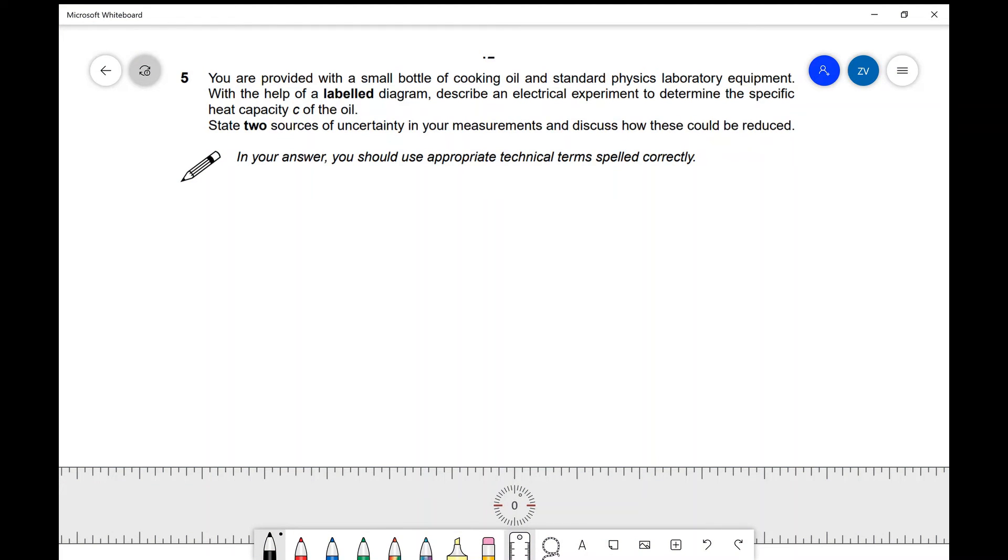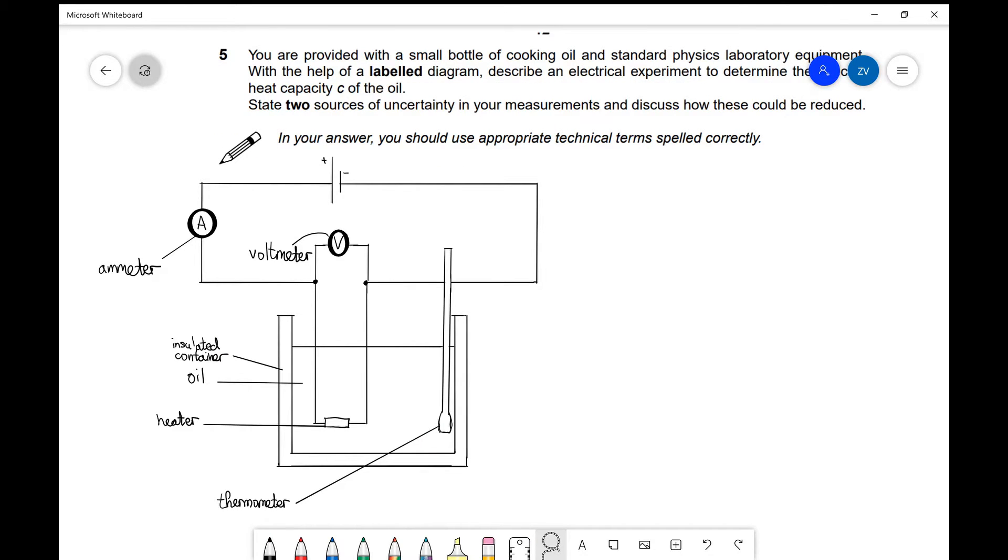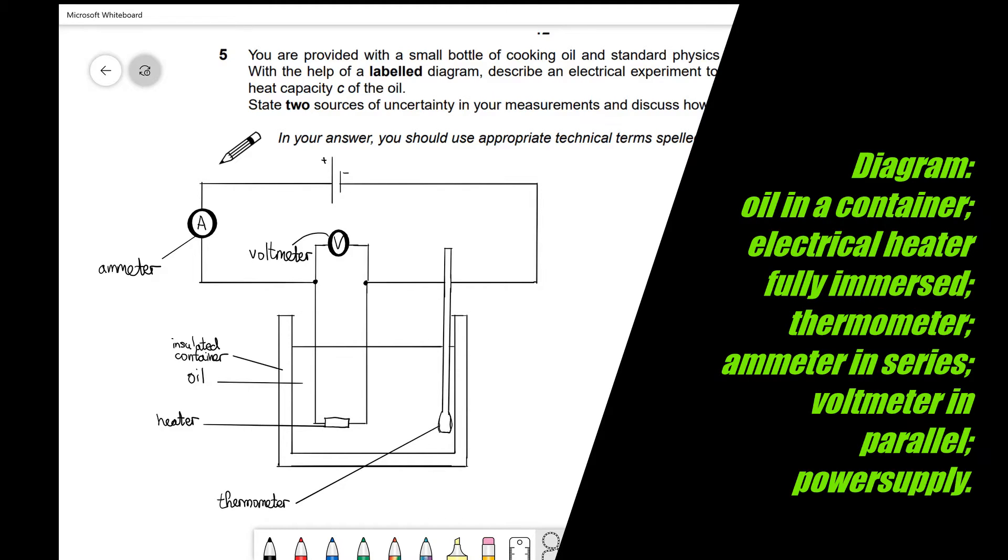Let's have a look at the labeled diagram first of all. Now it's time to look at the solution. First, notice that we have an insulated container over here, and we've actually immersed the liquid—in this case, that's some cooking oil—in there. We have a heater, and I want to draw your attention to the fact that the heater is fully immersed. If part of the heater was sticking out, we're going to be losing a large amount of energy, so we need to make sure that it's fully immersed.